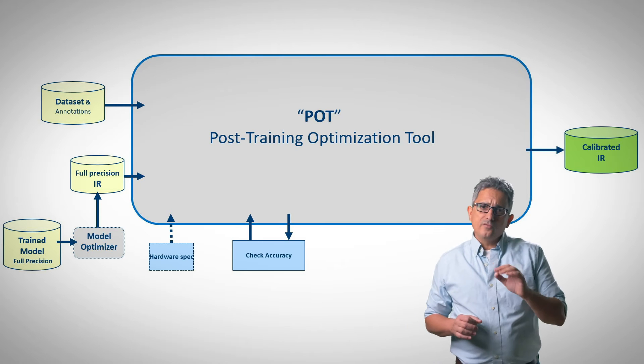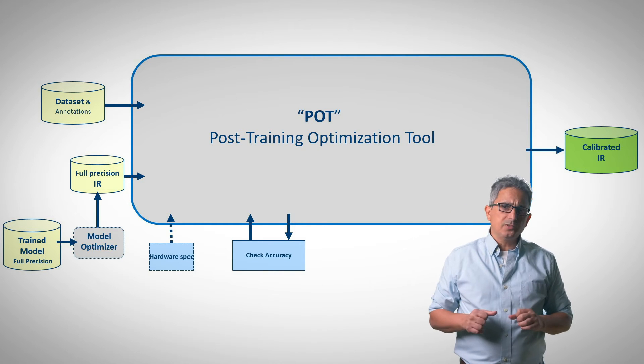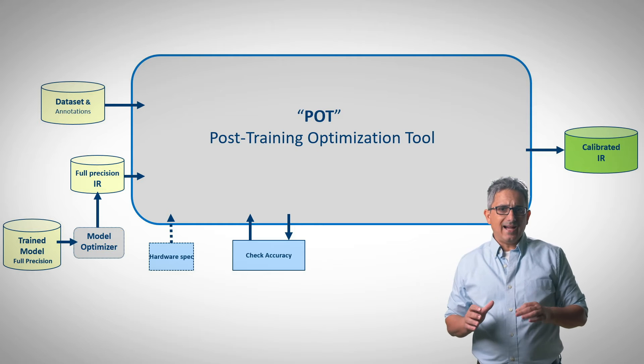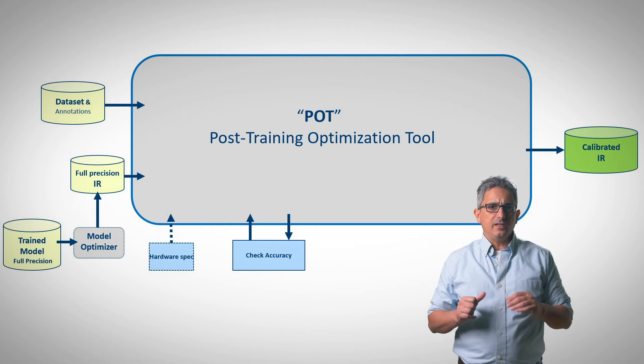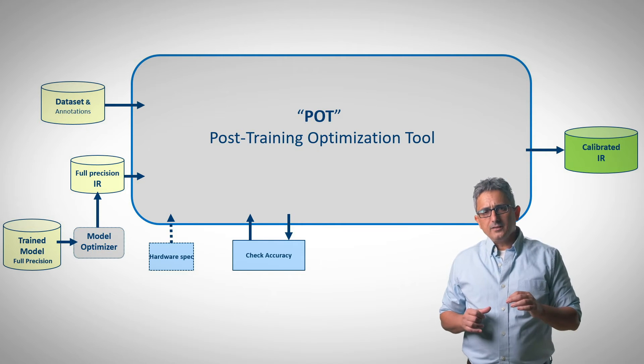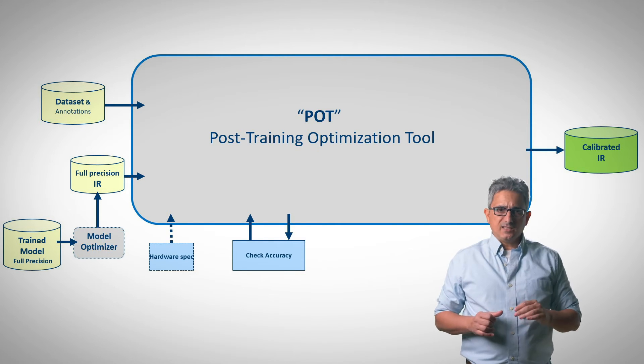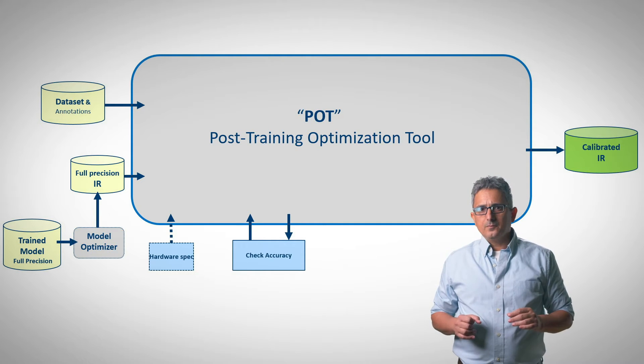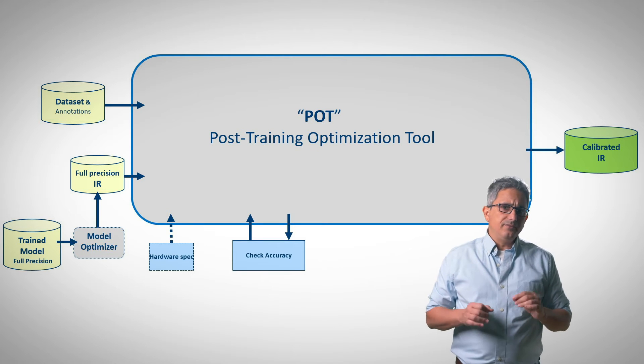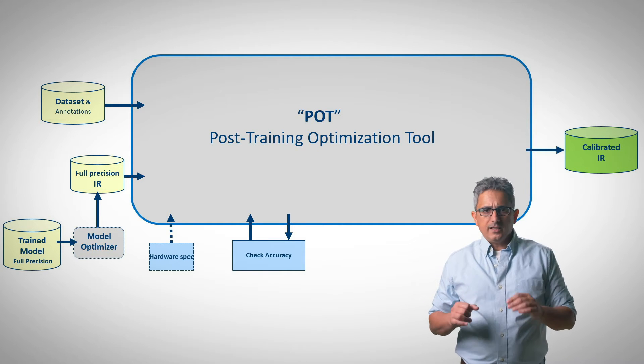This is the overall flow for the POT, the post-training optimization toolkit. We start with a model that is already in IR, intermediate representation in FP32 or FP16 format. And the target is to convert as many as permitted layers to int 8. As inputs, we will need the model IR files and the data set with the annotations.